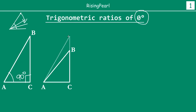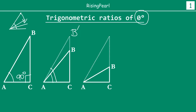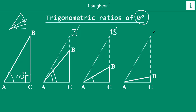The original triangle is represented by the dotted lines, and we call the original location of vertex B as B dash. As you can see, earlier our angle A was larger and now it is much smaller. As you continue to bring vertex B down — that is, as you continue to reduce the length BC — your angle A keeps reducing. The dotted lines show the original triangle.